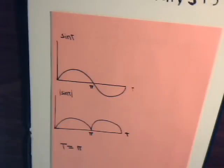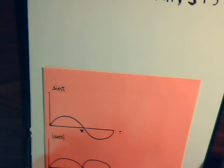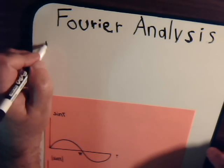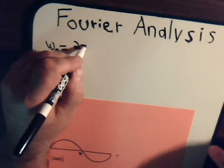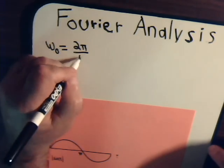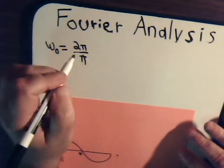And here, obviously the period for our function of interest is just π. And remember, omega 0 equals 2π divided by the period, in this case π.